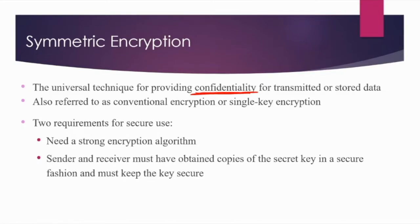We encrypt the data at the sender's end, and whenever the data is transmitted through public channels, no matter if the data is leaked, the attackers cannot get any meaningful information out of it. This encrypted data, or ciphertext, is only decrypted at the recipient end — this is how confidentiality is maintained. Encryption is a universal technique for providing confidentiality for both data in transmission and data which is stored somewhere.